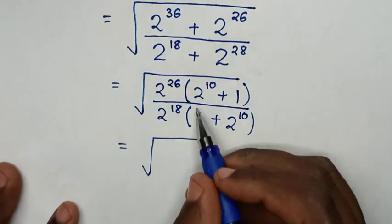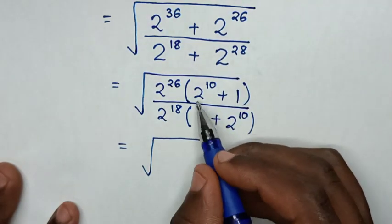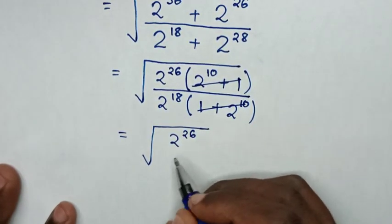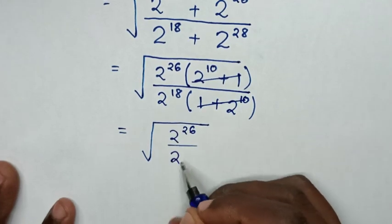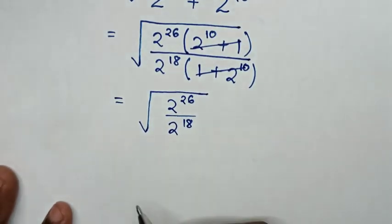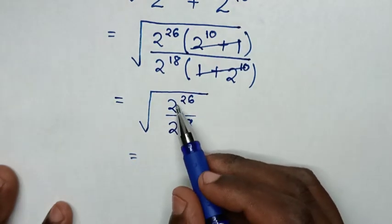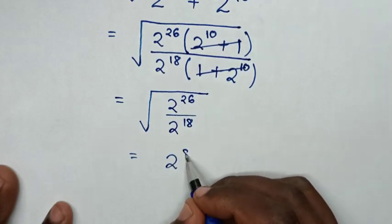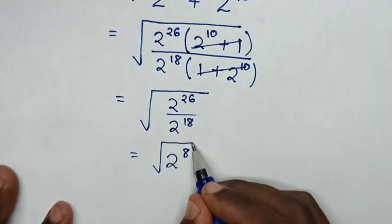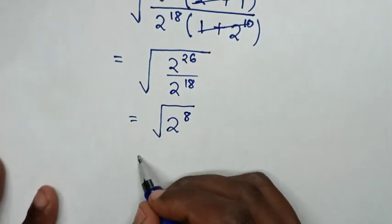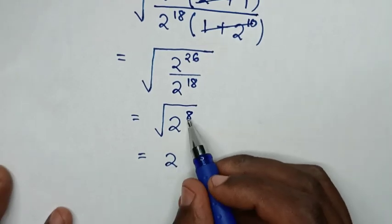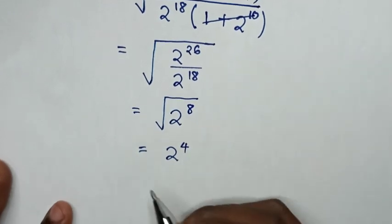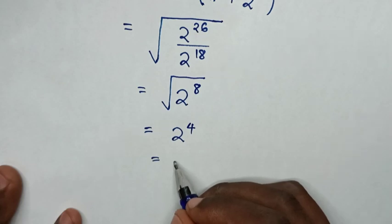Then to simplify, the factor (2 power 10 plus 1) appears in both numerator and denominator, so they cancel each other. It will then be 2 power of 26 over 2 power of 18, which equals 2 power of 26 minus 18, that is 2 power of 8. Then taking the square root: square root of 2 power 8 equals 2 power of 8 times one-half, which is 2 power of 4, and 2 power of 4 is 16. So this is our final answer.